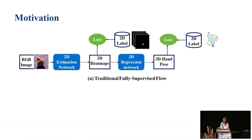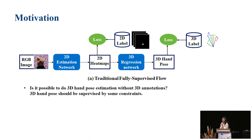To explore this question, I will first introduce the traditional fully supervised flow for 3D hand pose estimation. Many works use a two-stage network: first get the 2D results, then get the 3D results, adding supervision on the 2D labels and 3D labels. We know that accurate 3D labels are very hard to get, especially in real-world scenarios. Is it possible to do 3D hand pose estimation without 3D annotations? 3D hand pose should be supervised by certain constraints.